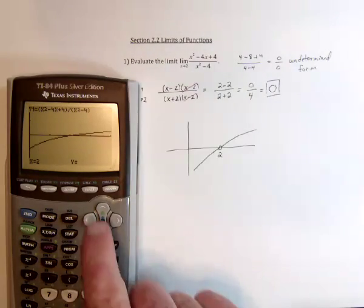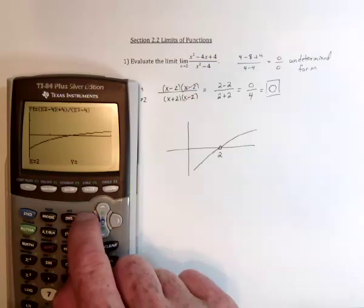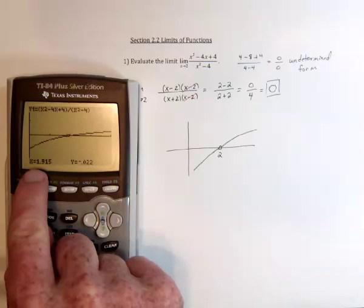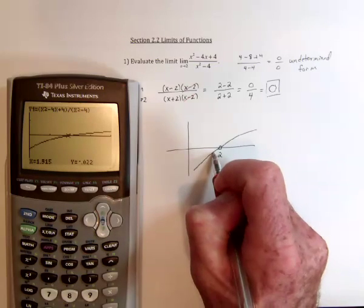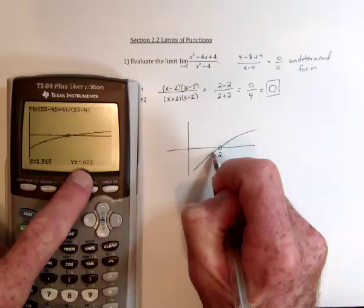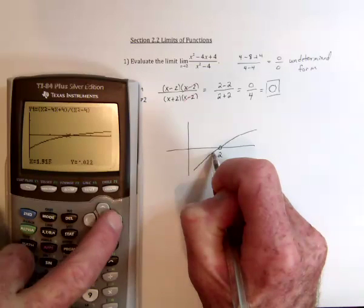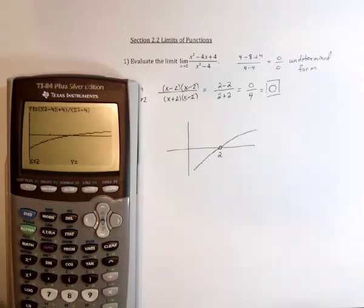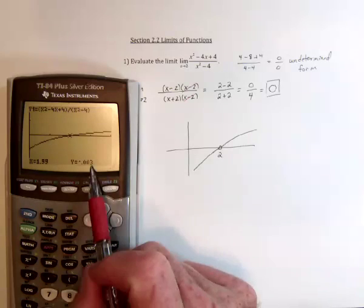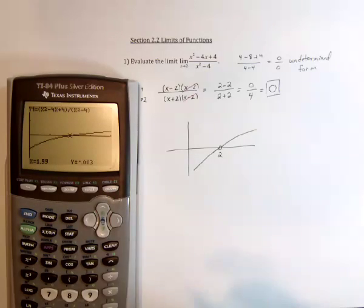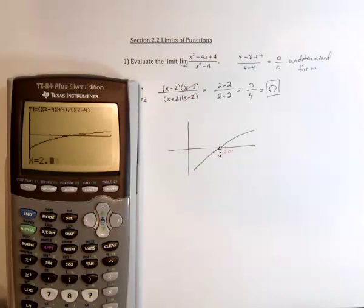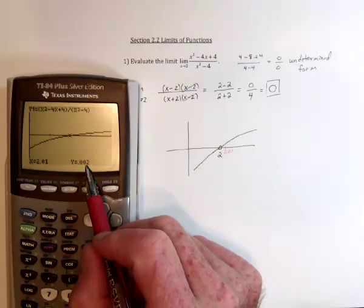And finally, you can see it numerically. If you trace and say, what if I wasn't exactly at x equals 2, but I was close? Over here on the left side, 1.9 is giving a result very close to 0. Get closer, and it gets closer to 0. At 1.99 we're very close to 0. And the same thing happens on the other side — if I use 2.01 or something like that, then the result is very close to 0. So it looks like 0 is correct.